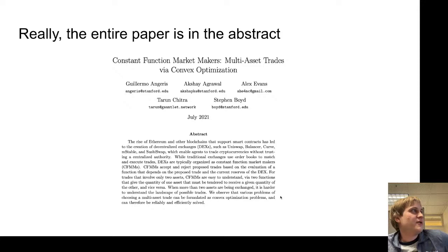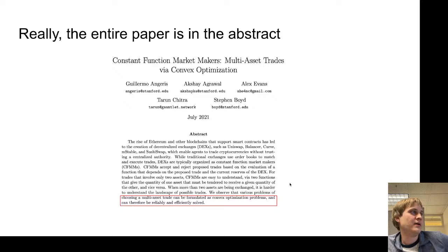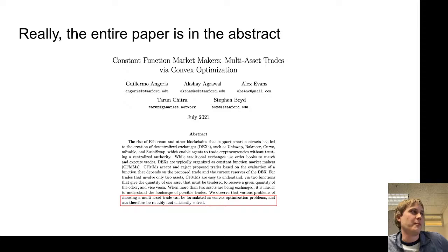So this is the paper. One of the things that I like about the paper is that it's very simple. Not to trash the authors too much, but I really do feel like you can get the entire gist of the paper just from reading the abstract. Really, the last sentence of the abstract is the big hit-you-in-the-face idea: that lots of different multi-asset trades can be formulated as convex optimization problems.